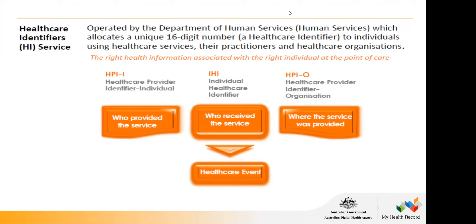HPIOs and HPIIs are important numbers to understand. In order to access a patient's My Health Record, you need to be familiar with these identifying numbers and abbreviations. An HPIO — healthcare provider identifier organisation — tells you where the service was provided. It could be a hospital, a medical practice, or a sole trader providing services in the patient's home. It identifies which organisation provides the service.